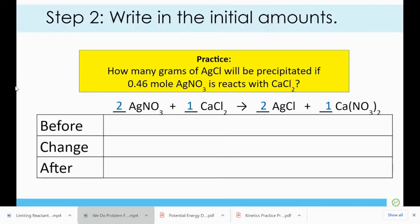So in this one, we're going to write the initial amounts. It tells us we started with 0.46 moles of silver nitrate. That's all going to be reacted. So that tells us that we have plenty of calcium chloride. Before the reaction starts, we have no products. So the products are always zero before the reaction starts.